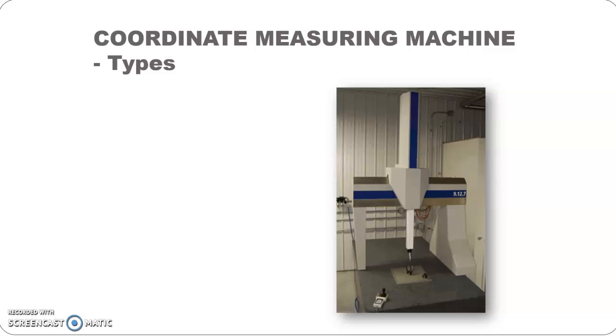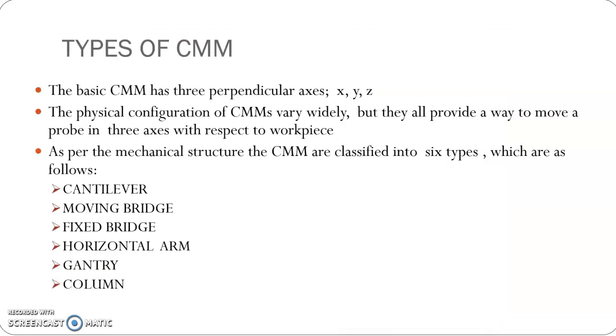The types of CMM. As per the mechanical structure, CMMs are classified into six types: one is cantilever, then the bridge type which has two types - moving bridge and fixed bridge, then horizontal arm, gantry, and column.